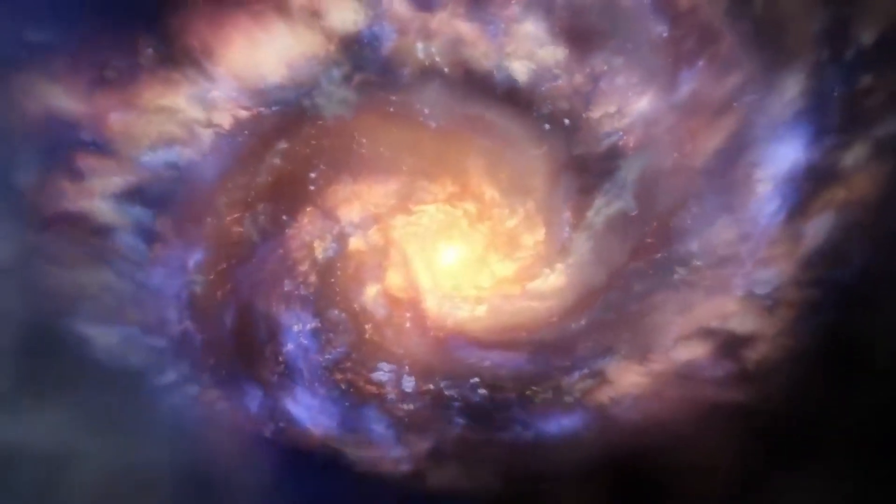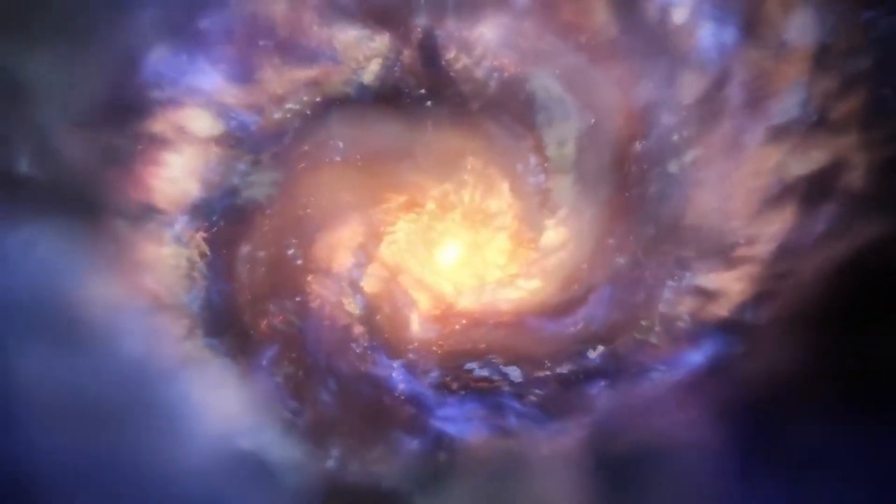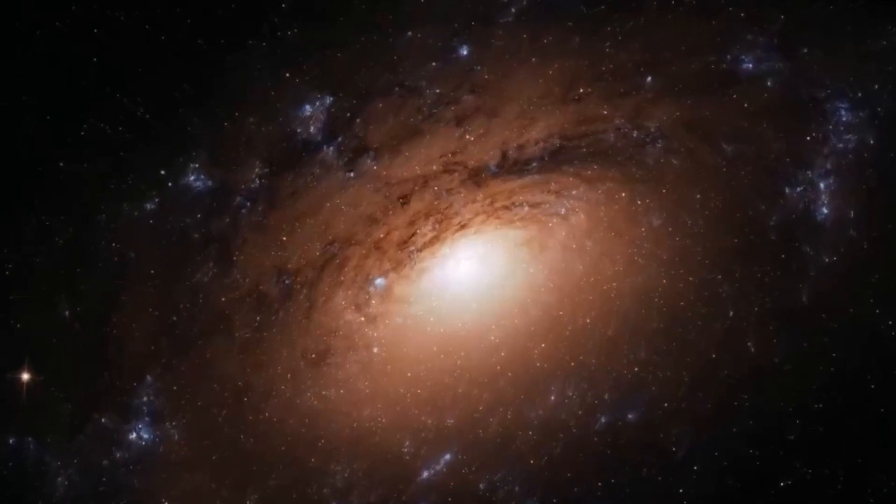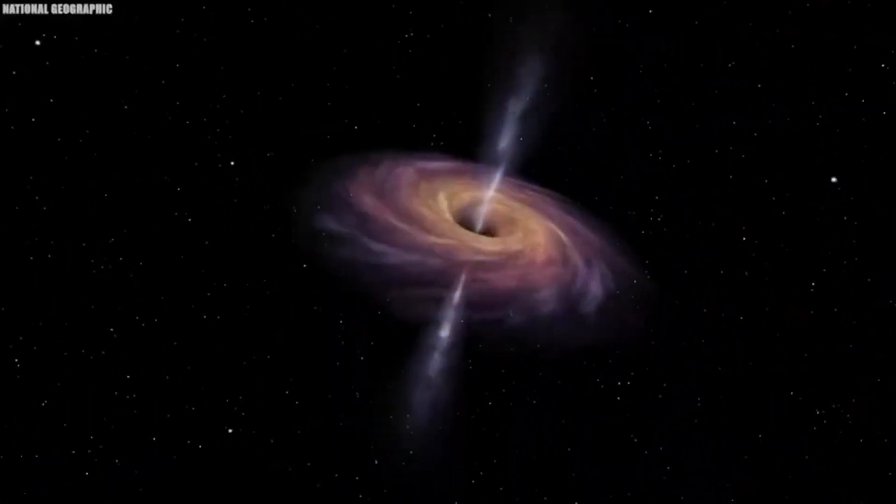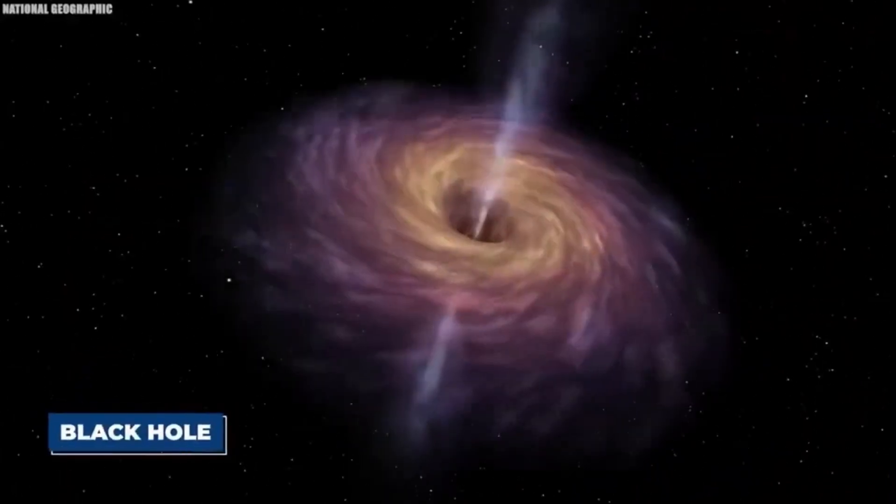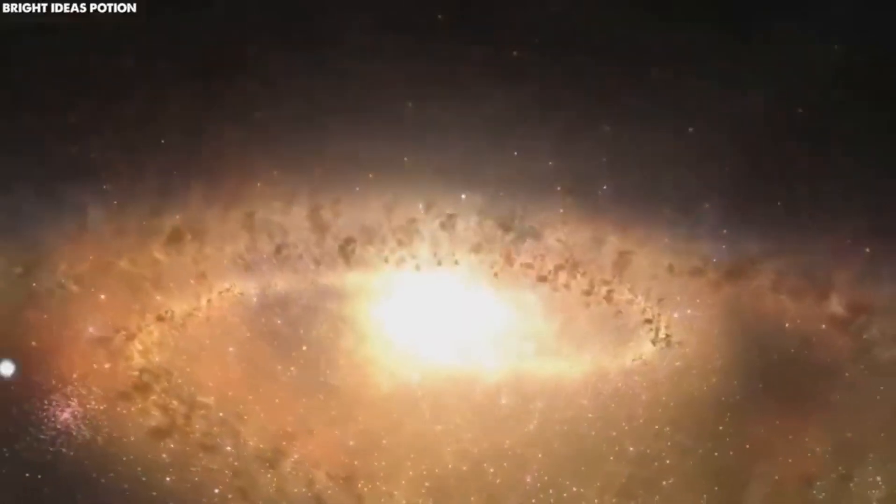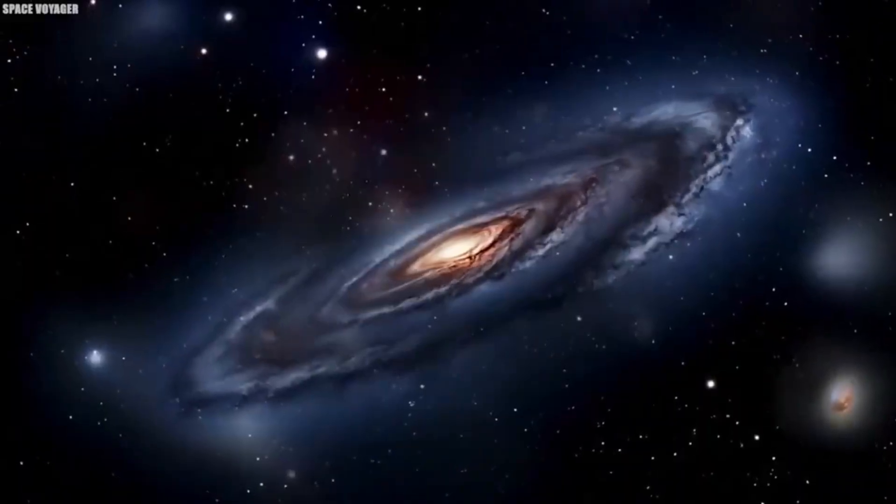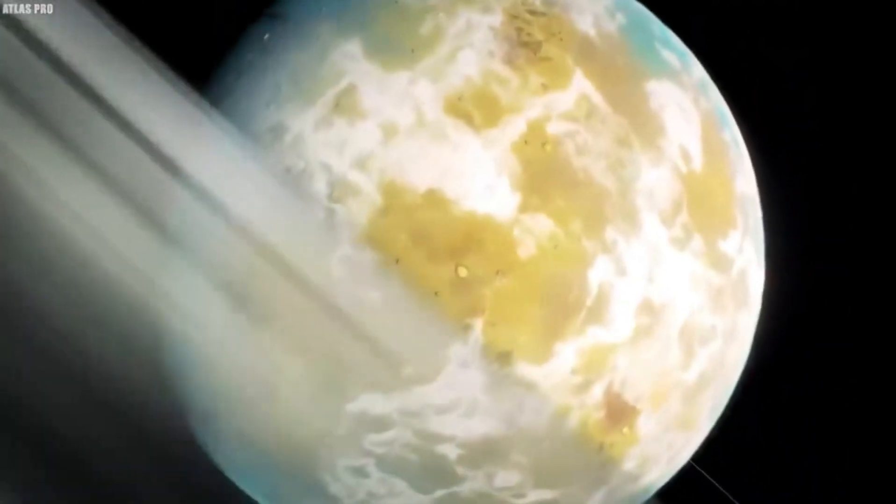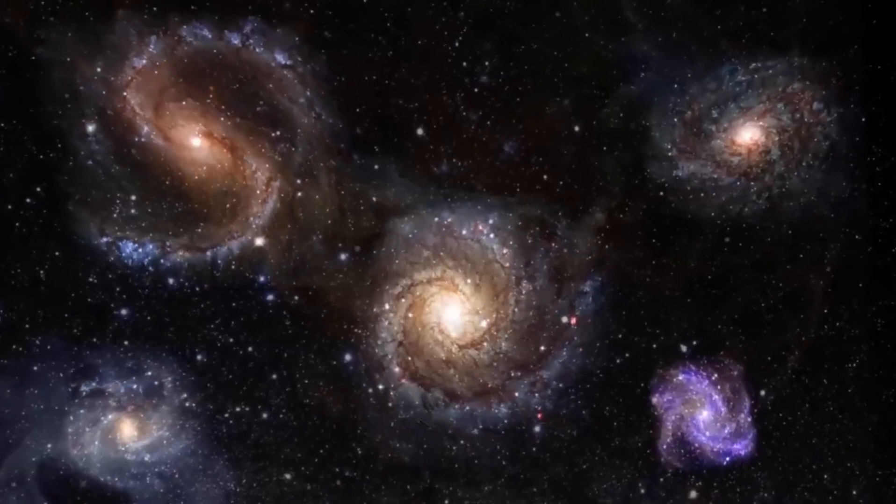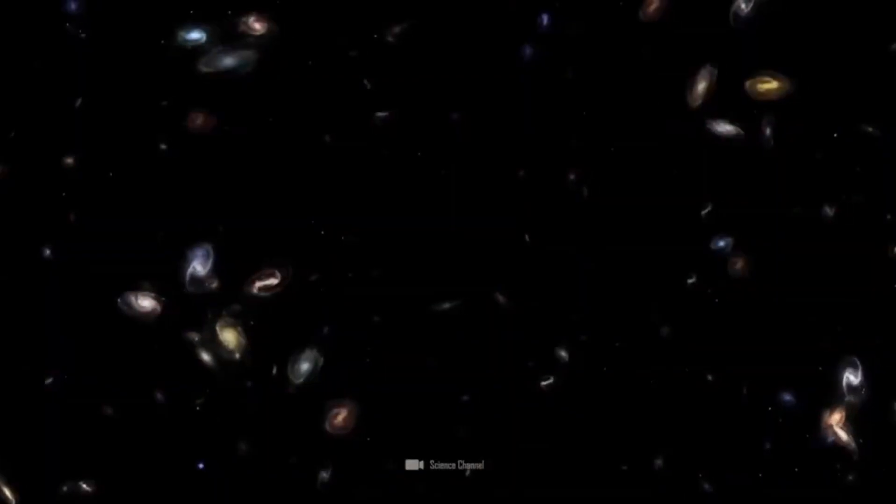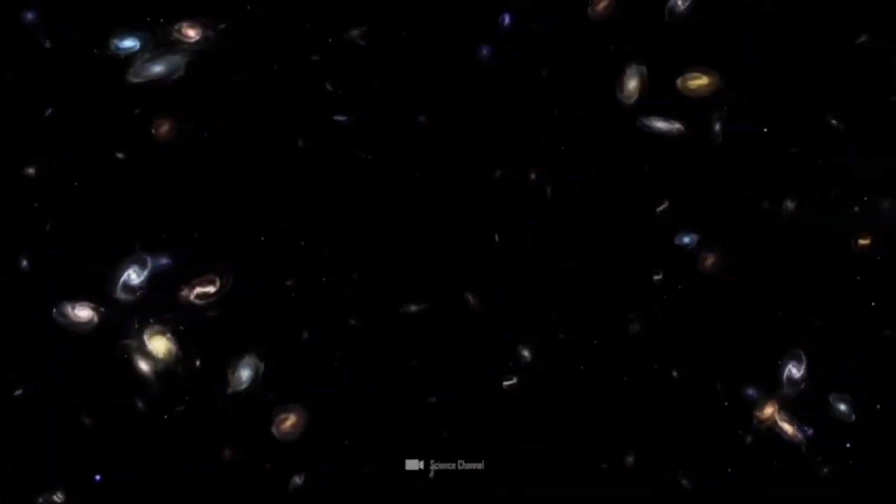James Webb shows us six galaxies that are so old and so perfectly developed that they should not actually exist in the epoch observed. The JWST was designed to look into the Dark Ages, where the first stars were formed. But instead of showing us the expected protostars and baby galaxies, the telescope serves us rows and rows of perfectly formed and very old-looking galaxies. So are we really looking at the beginning and thus the temporal edge of the universe? And above all, did the Dark Ages really exist, or did we humans just make it up because we didn't know the truth?